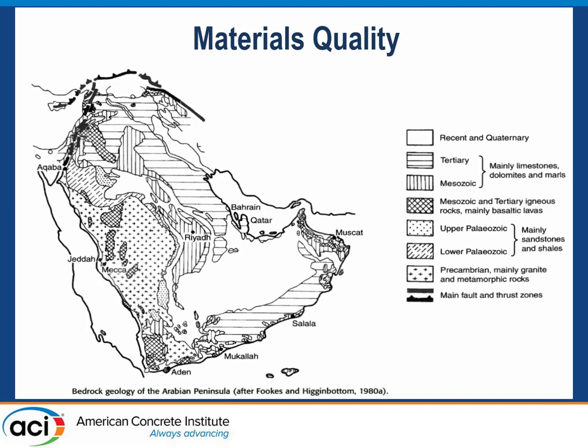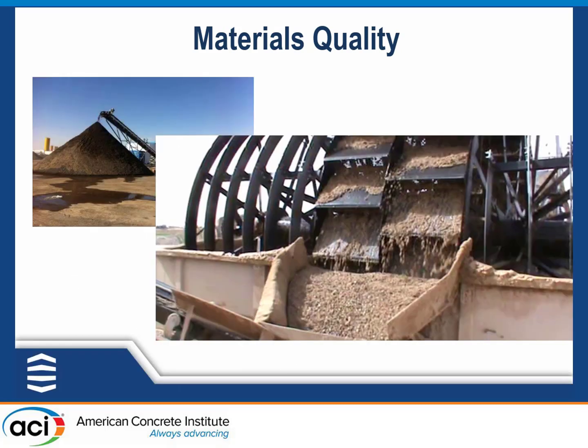Looking at the geology of the Arabian Peninsula, good-quality materials are largely restricted to the west of Saudi Arabia, UAE, and Oman — the main sources of aggregate. Because of this, it is very common for projects to include sand washing facilities and aggregate processing facilities on site.